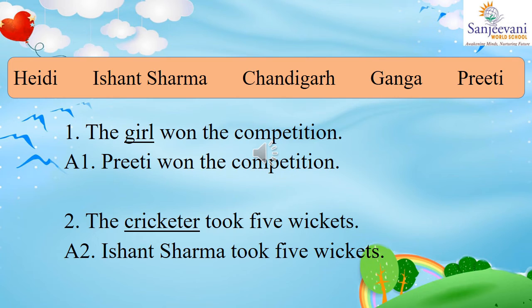In the box you can see five words for five statements: Heidi, Ishanth Sharma, Chandigarh, Ganga, and Preeti. The first statement is 'The girl won the competition.' The underlined common noun is 'girl.' We need to replace it with a proper noun — a girl's name. Ishanth Sharma is a boy's name, Chandigarh is a city, Ganga is a river. So we use Preeti or Heidi, both girls' names. We will use Preeti here.